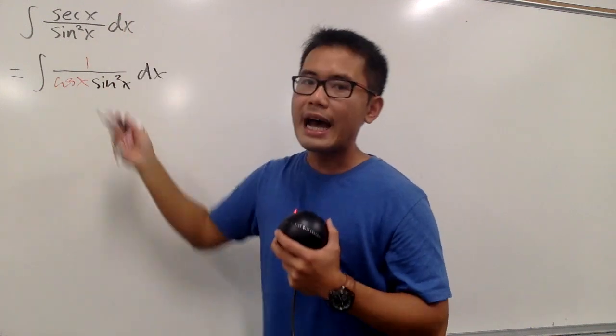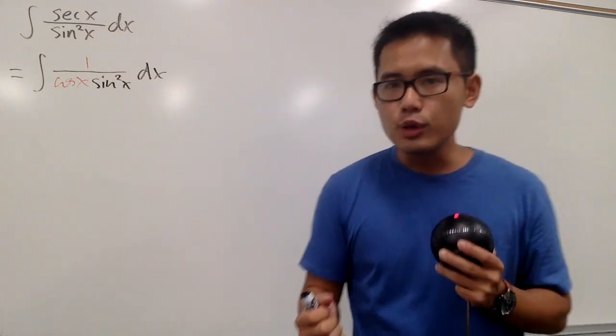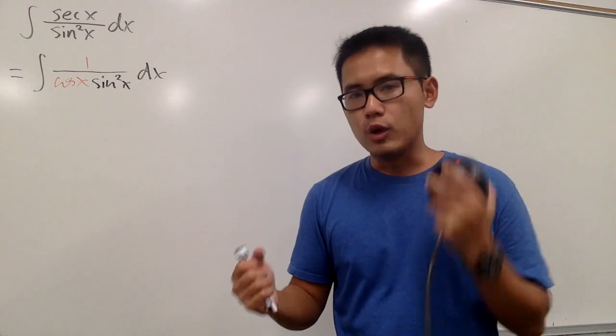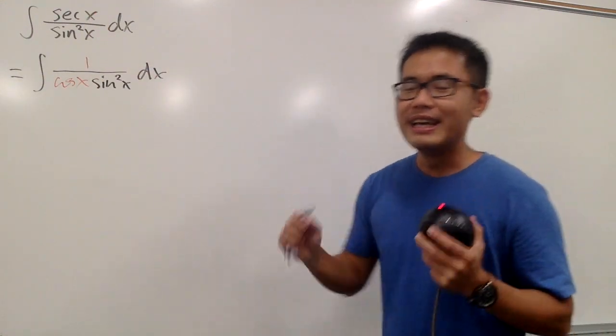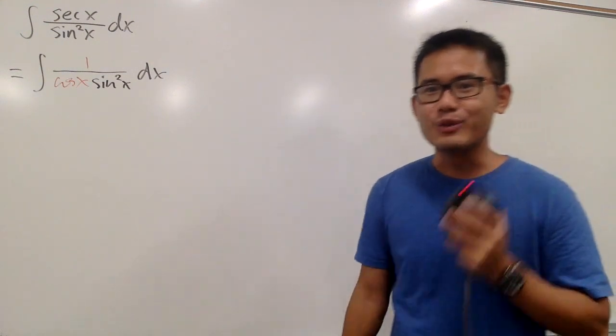And the reason for me to do that is because when we're doing an integral, we like to work with sine and cosine, right? We don't want to work with secant and sine. They don't match that well. Sine and cosine are good friends in integration, right?